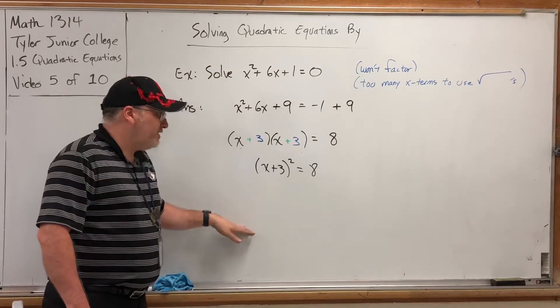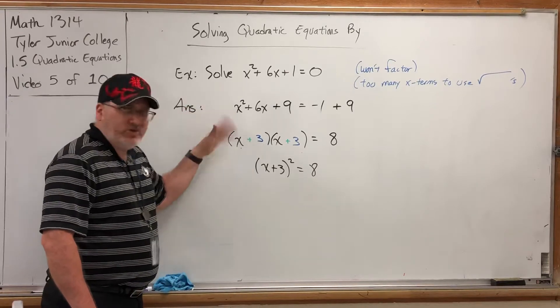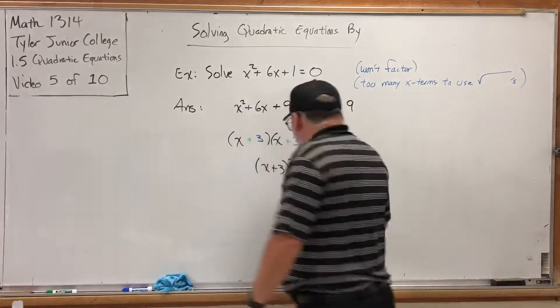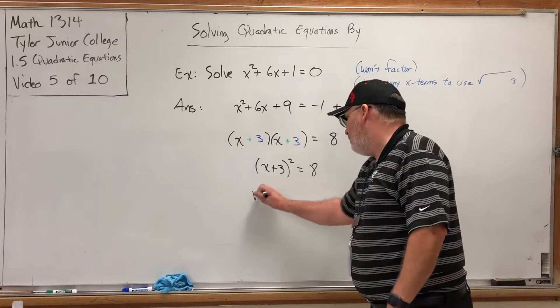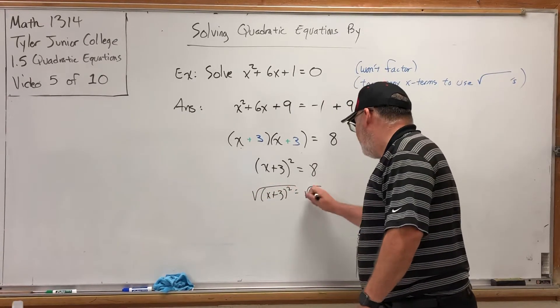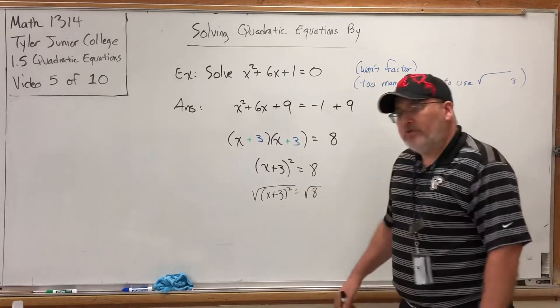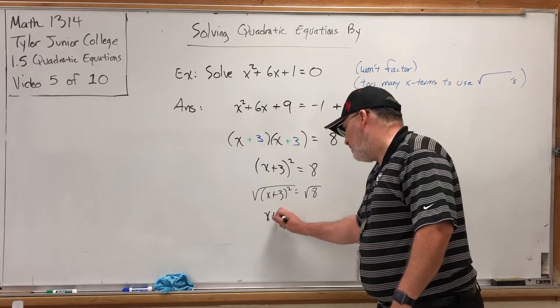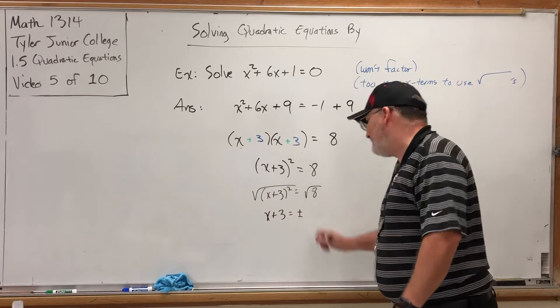Let's go ahead and finish this, and then we'll summarize what just happened here. If I square root both sides of this now, the square root will cancel the square, leaving x plus 3. I'll use a plus-minus on the right side.